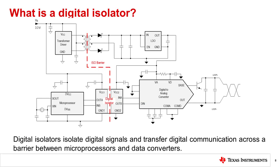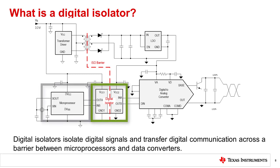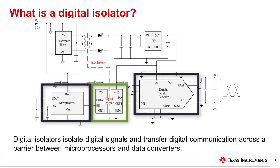What is a digital isolator? Digital isolators are integrated devices used to isolate digital signals and transfer digital communication across an isolation barrier. Because digital isolators are working with a pre-digitized data stream, they typically follow the ADC in a system, sitting between a microprocessor and FPGA that are at different supply levels, or between interface communication boards with shared backplanes. In this example, the digital isolator is protecting the MCU data line from the output digital-to-analog converter in a 4 to 20 milliamp loop.